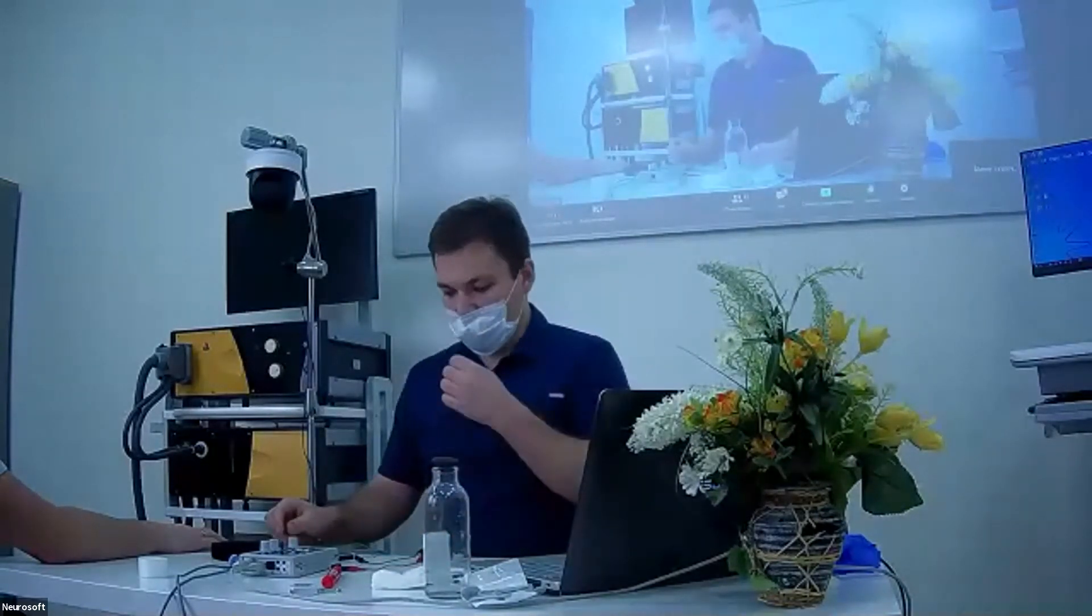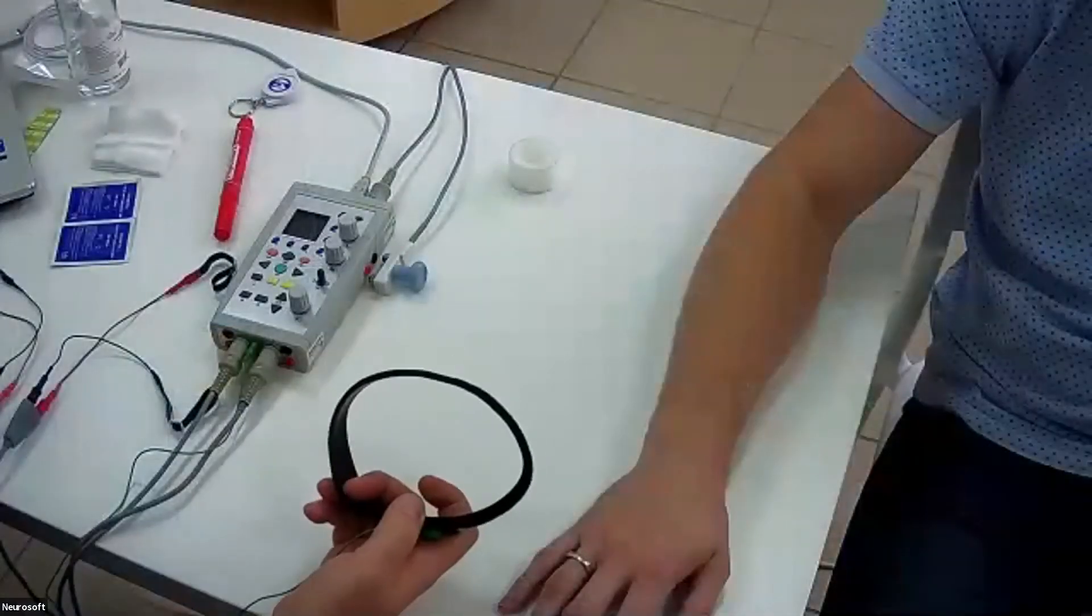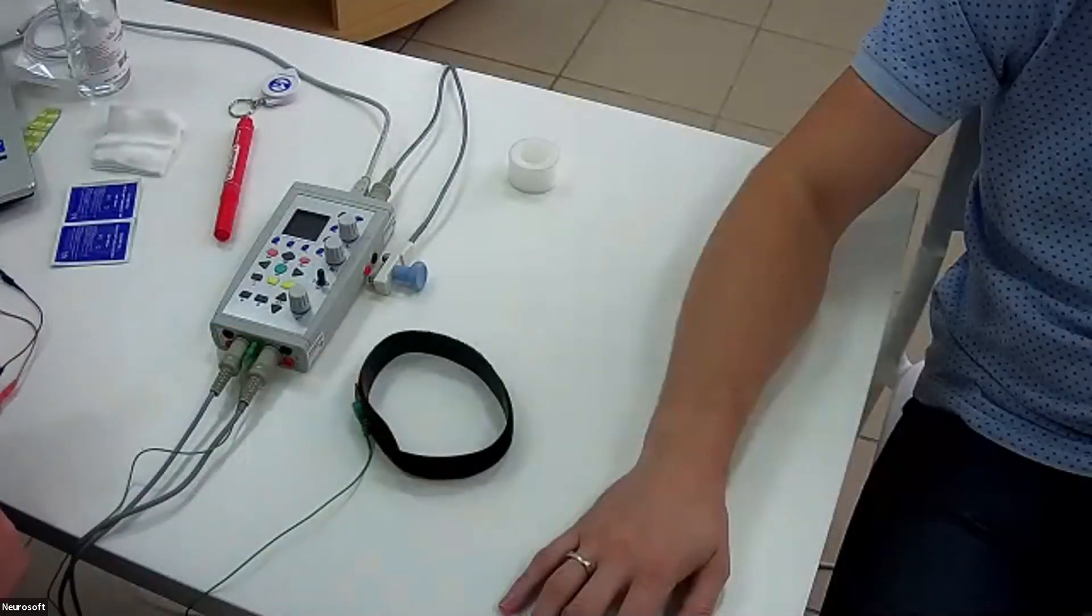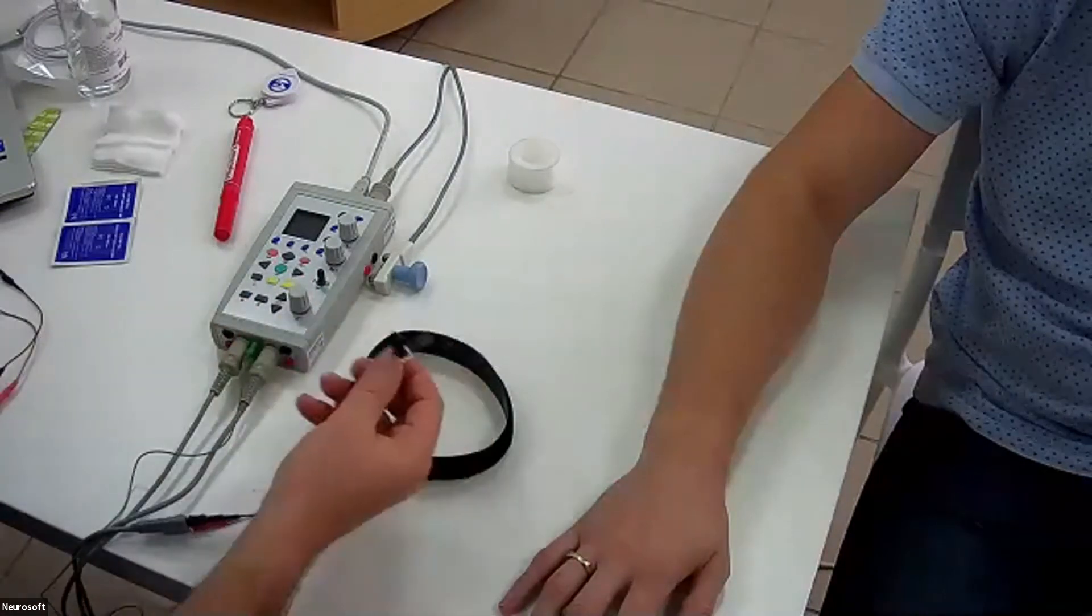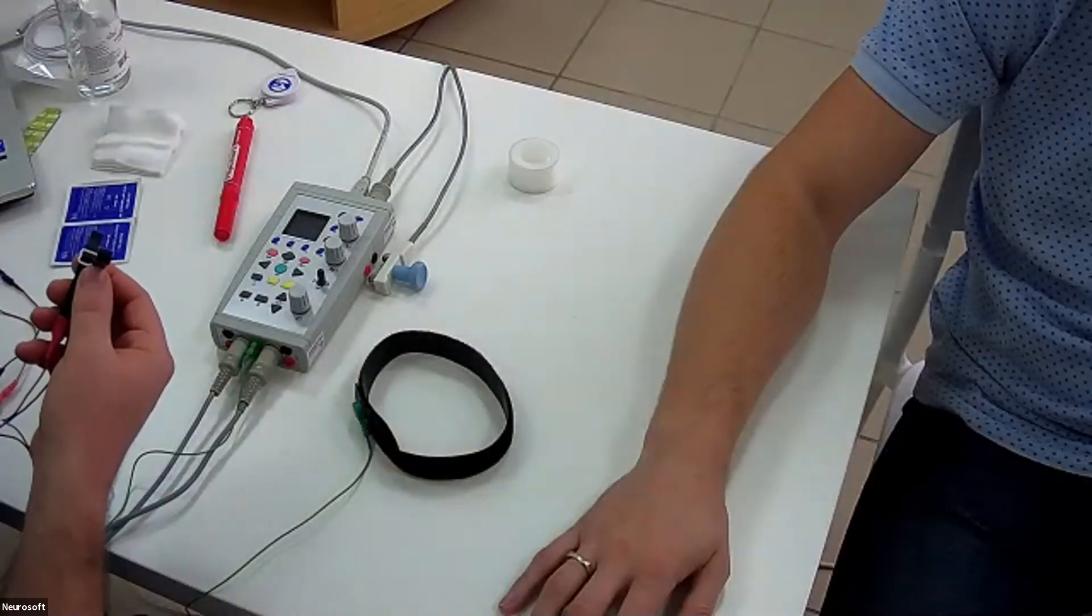For grounding, we will use these shape electrodes. For registration of sensory answers, we will use ring electrodes.